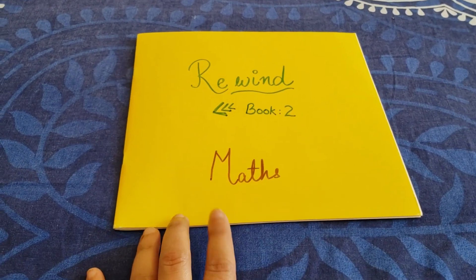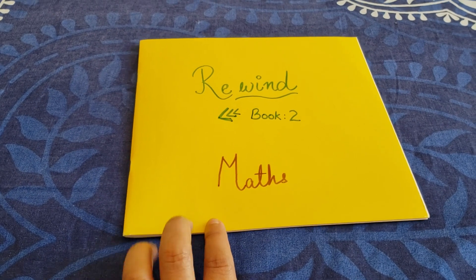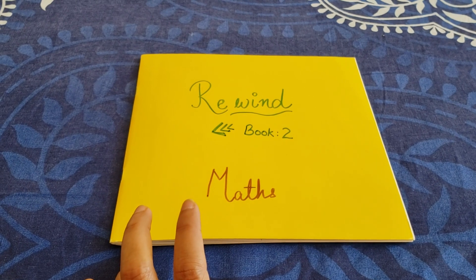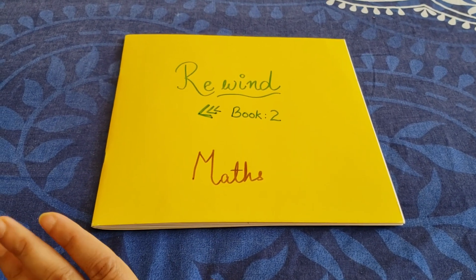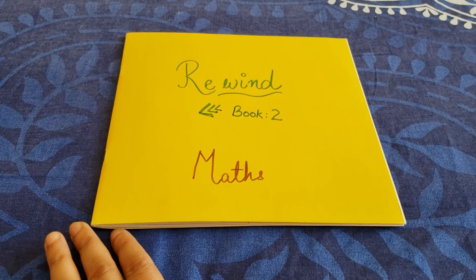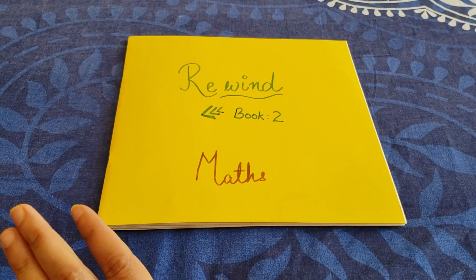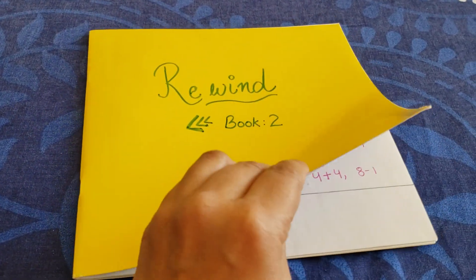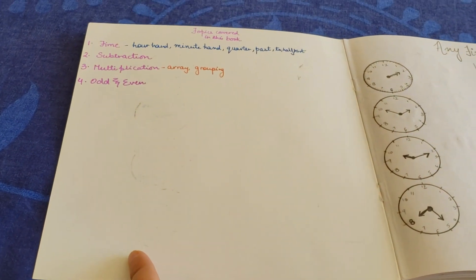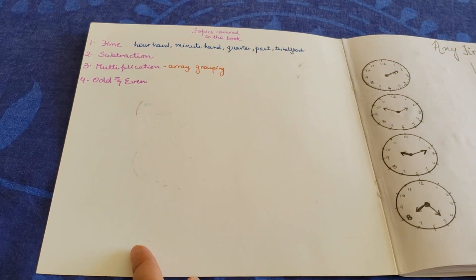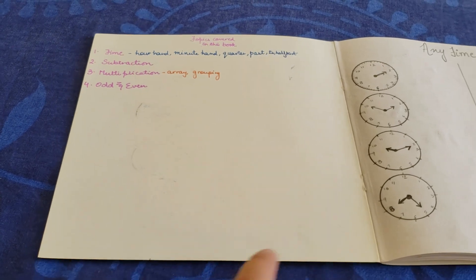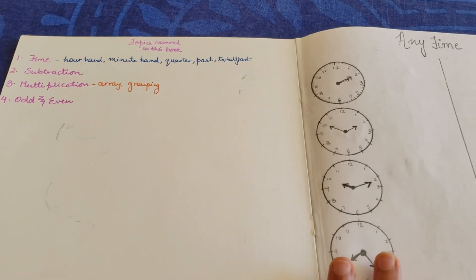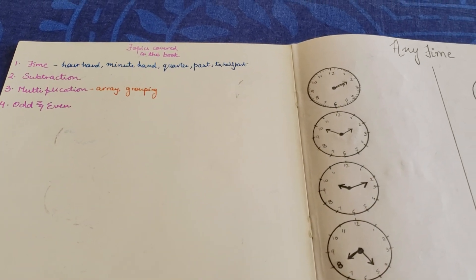Going forward, I'm going to share the link of book one that I did with Vivan. The whole concept is to brush up the concepts we did the whole last year and just do the activities for revision. That's why the book is called the Rewind series. The topics we're doing in this book are time, subtraction, multiplication, odd and even. For time we have hour hand, minute hand, quarter past, half past. In multiplication we're doing array and grouping.